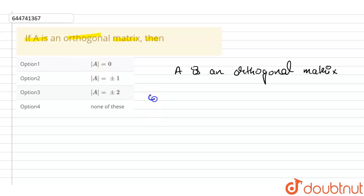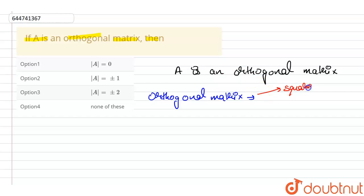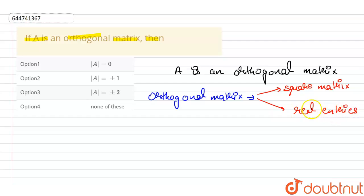First of all, let's look at the properties of an orthogonal matrix. An orthogonal matrix is a square matrix whose entries are always real numbers.